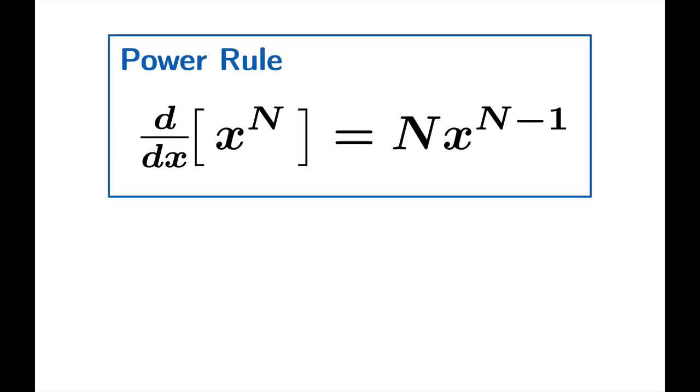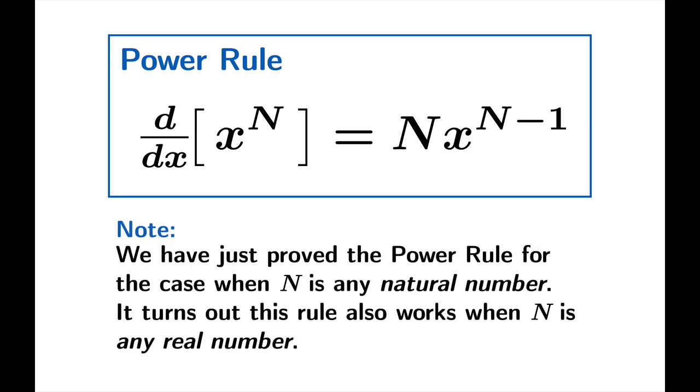In the end it wound up being n x to the n minus 1. So our conjecture was correct. The power rule states that the derivative of x to the n is n x to the n minus 1. It's important to realize that this proof applies only when n is a natural number. However, the power rule does work when n is any real number. We just don't have a proof for it yet.